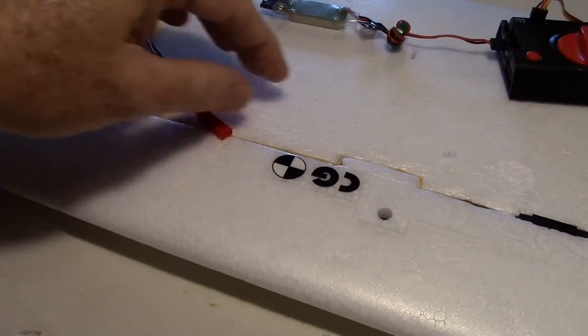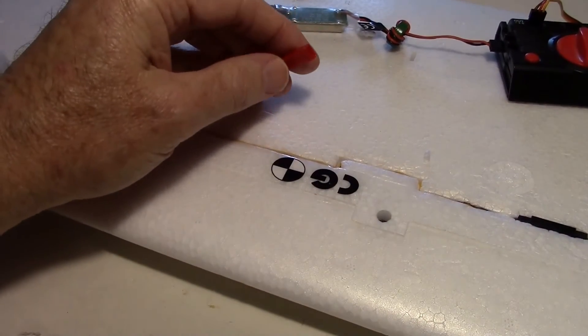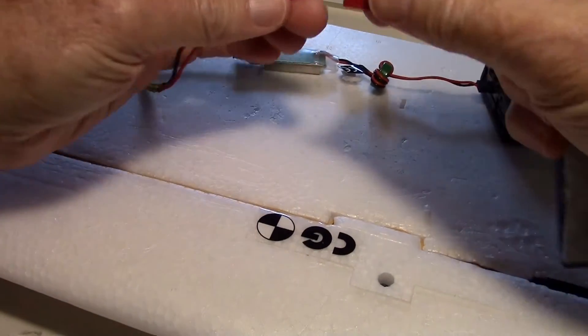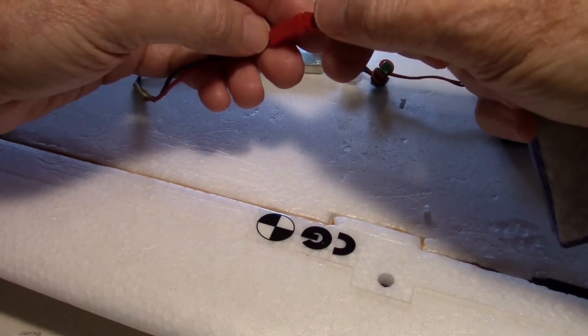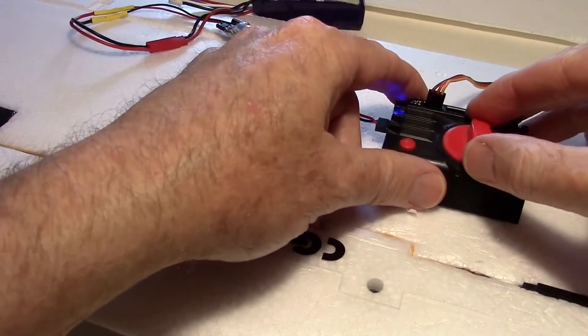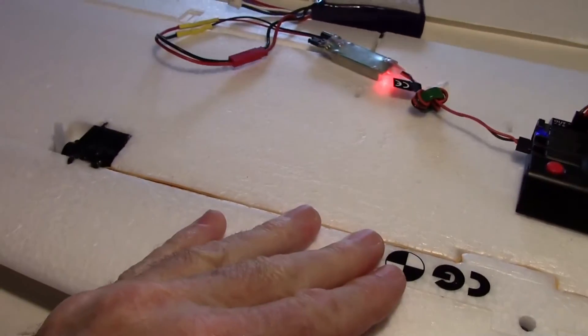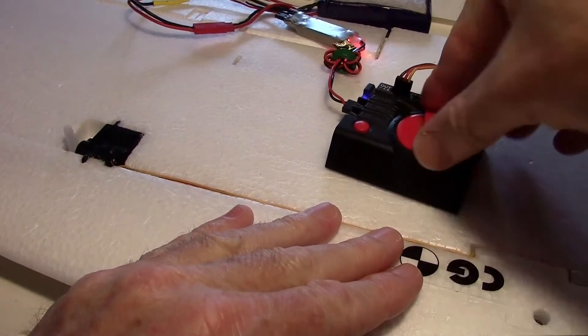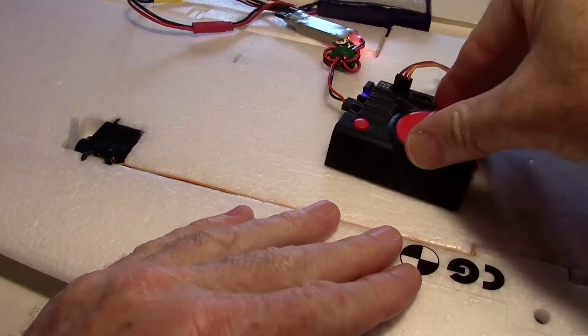Now just to make sure we haven't disconnected anything or cut the wires, let's go ahead and run the servo tester again. You knew I wanted to anyway. I just love turning that dial. Oh yeah. That looks like it's got plenty of throw. We're good.